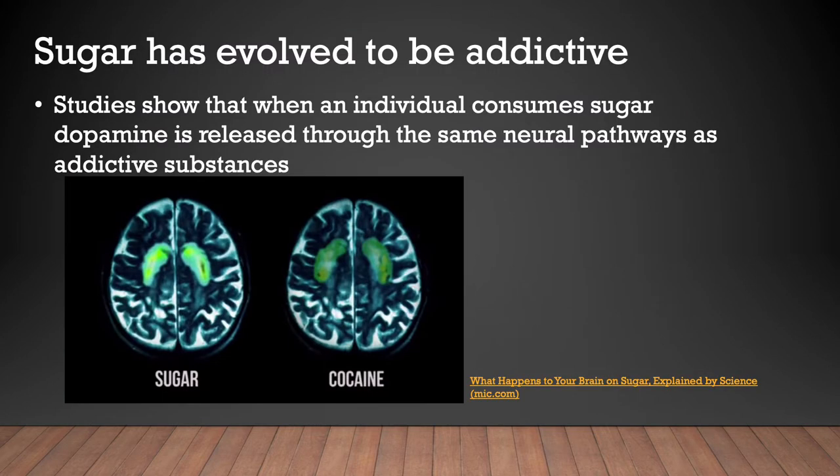Sugar has evolved to be addictive. Studies show that when an individual consumes sugar, dopamine is released through the same neural pathways as addictive substances. The same parts of the brain light up for nicotine, methamphetamine, and caffeine as well.